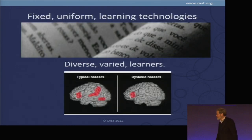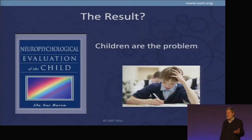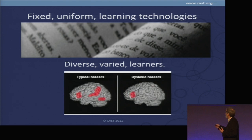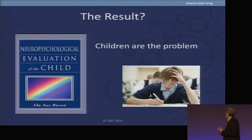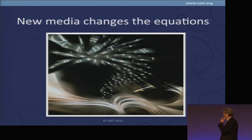So what does this mean for all of us? We tend to use fixed, uniform learning technologies — things like a book — and we have highly varied learners who are not coming to it with the same brain at all. The problem is we've always identified the kid as the problem. I used to be a neuropsychologist — these are the books you read: neuropsychological evaluation of the child. What's wrong with this child? Because they don't have a good match between the media we use and the brains they're using. But the children are blamed. New media are changing these equations, and that's why new media are part of doing UDL.